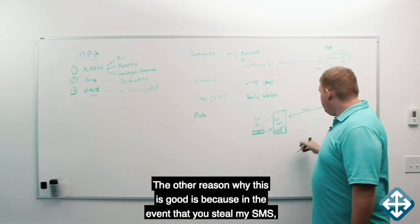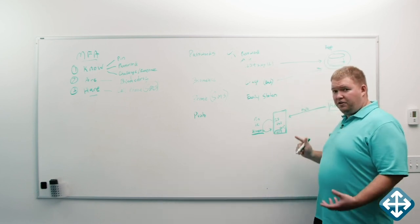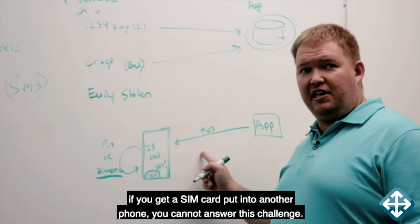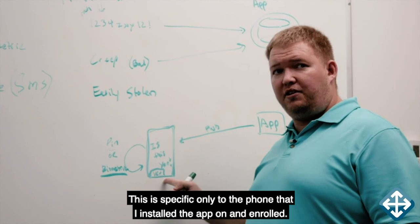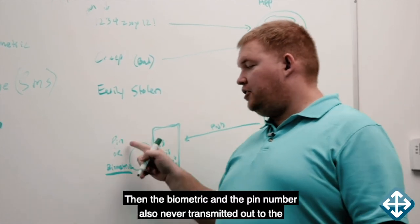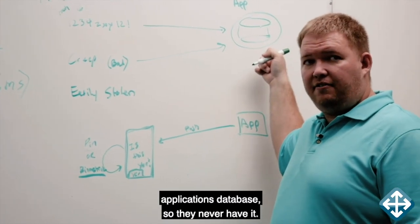The other reason why this is good is because in the event that you steal my SMS, if you get a SIM card put into another phone, you cannot answer this challenge. This is specific only to the phone that I installed the app on and enrolled. Then the biometric and the pin number are also never transmitted out to the application's database, so they never have it.